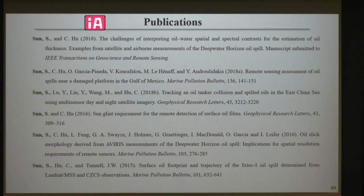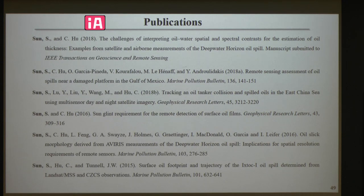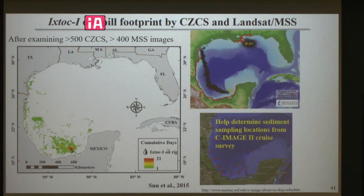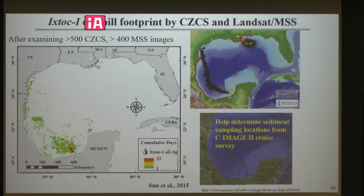You said that your IXTOC maps were used to inform where the sediment sampling was done. Did your map agree with what they found in their sediment samples? Did they find oil where you said there was surface oil? The sea-going crew would take sediment cores, and they found oil in the sediment — a layer of oil in the sediment. Whether they found it in every location, I don't know.